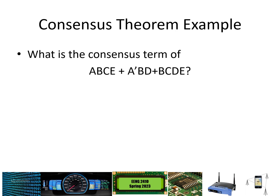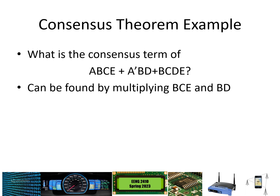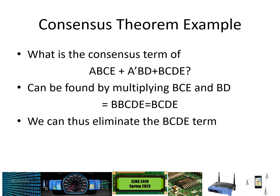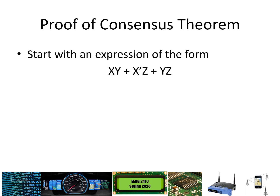For an example: in the first term we have abce, and in the second term we have a'bd. We have an a and an a'. Pulling off what's multiplied by a gives bce, and what's multiplied by a' gives bd. Multiplying those together gives b·b·c·d·e. Since b AND b equals b, the consensus term is bcde. We have a bcde term, so we can eliminate it via the consensus theorem.